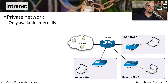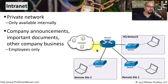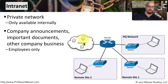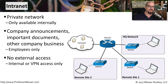A type of network topology that is only available from the inside of your network is an intranet. This is where you might put important resources in the center of the network, and it doesn't matter if you're at headquarters or one of the remote sites — you're able to access those resources. These would be things for employees only, like company announcements and important internal documents. There is no access from the outside into this intranet. If someone did need to gain access, they would connect to the internal network with their VPN client.